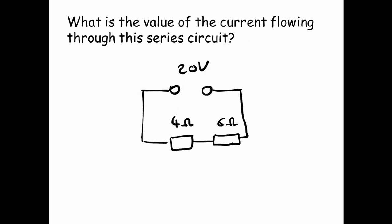So firstly, what is the value of the current flowing through this series circuit? Well, you've got a total resistance of 4 plus 6, which is 10 ohms. Then we're going to use V equals IR. So V divided by R is I. So 20 divided by 10, that's 2 amps.